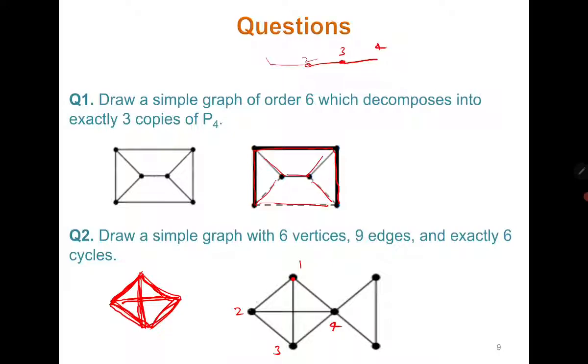Cycle means that if you are starting at any vertex you are reaching back to the same vertex. From 1 you can go to 2, 2, 3, 3, 4, 4, 1, therefore this is a cycle. From 1 you can go to 2, 2, 3 and 3, 1 again this is a cycle. So this is how if you see then you can try to draw another graph with 6 vertices, 9 edges, and exactly 6 cycles.